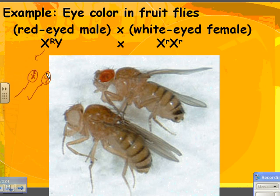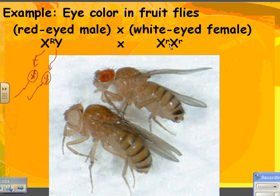They make both types 50-50, which is actually very important. The white-eyed female is recessive and has two traits, so we write X little r, X little r. That helps us remember that there are two alleles in females and just one allele in males for this trait.